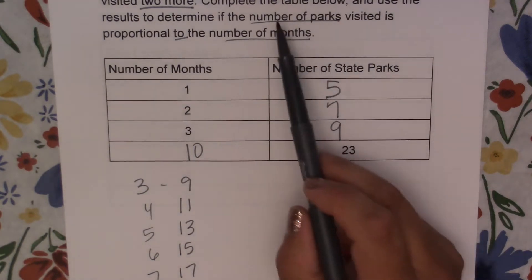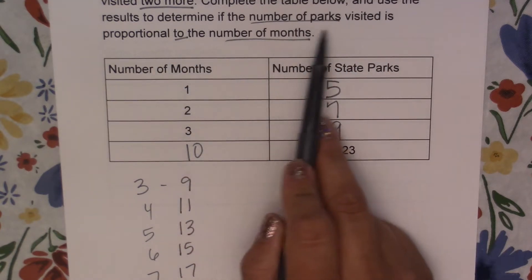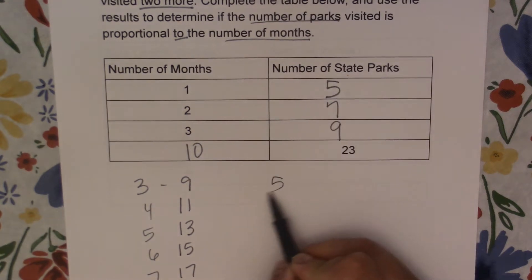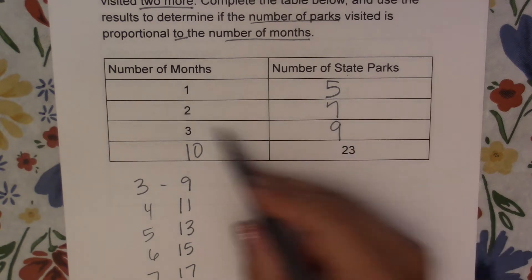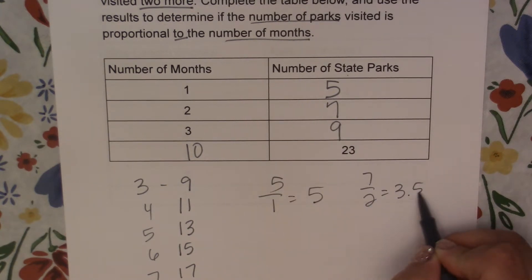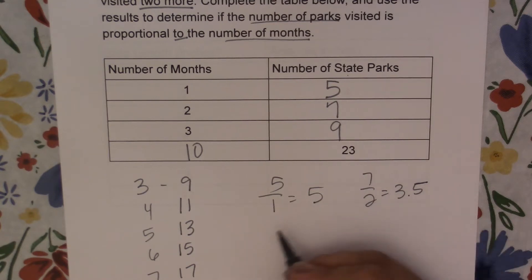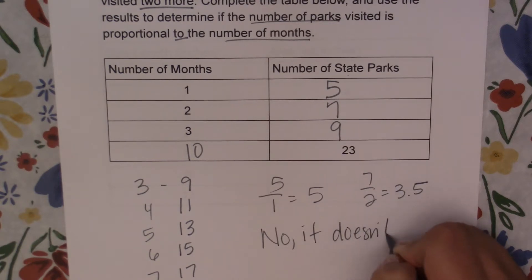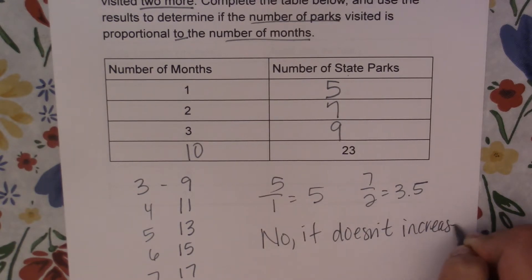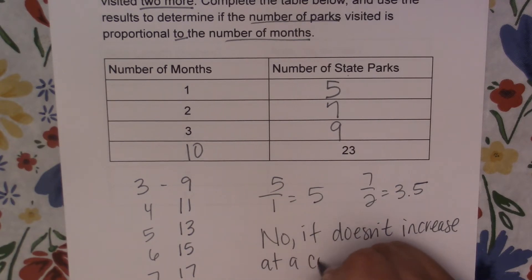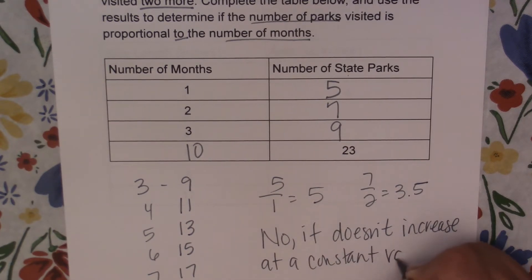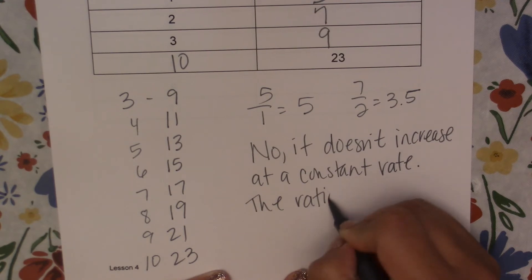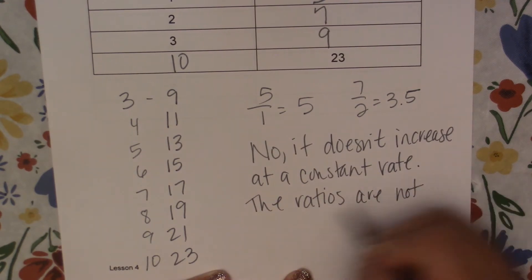Now we need to answer our question: is the number of parks visited proportional to the number of months? So if we go state parks to months, five to one would be five. Seven to two is not five, so we know that this is not proportional. No, it doesn't increase at a constant rate. The ratios are not equivalent.